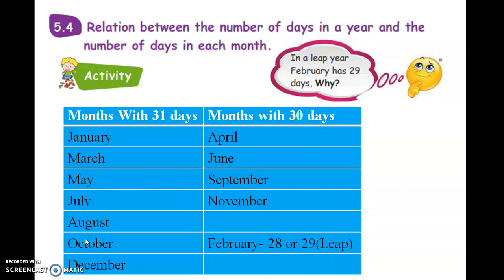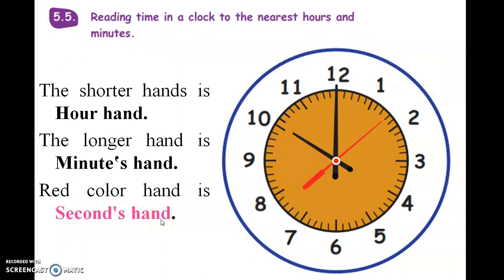Friends, let us see the relation between the number of days in a year and the number of days in each month. Months with 31 days are January, March, May, July, August, October, and December. Months with 30 days are April, June, September, November. February has 28 days in normal year and 29 days in leap year.